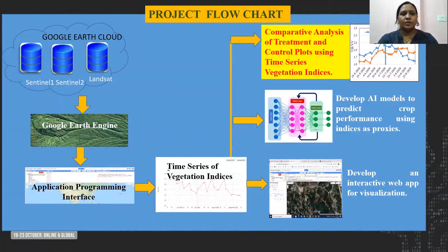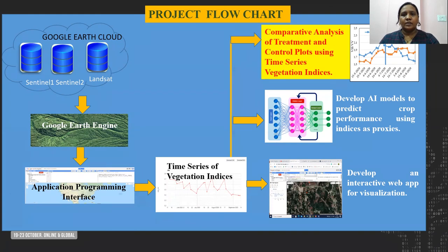Good day everyone. Here I give you insights about the project approach and some preliminary results, as the project is still under a nascent stage. In this project, we have accessed open source satellite data from Google Cloud using Google Earth Engine and developed time series of vegetation indices using some APIs. Using these indices, we have done a comparative analysis between treatment and control plots, done an ANOVA analysis on that. The other objective is to develop AI models to predict crop parameters using these indices as proxies. We are also developing an interactive Google Earth Engine based web app for visualization of images and time series data.